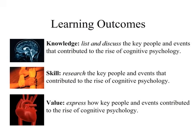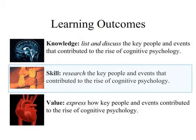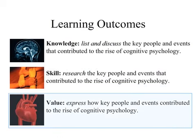Before we begin, let's outline the three learning outcomes for this module. In terms of knowledge, we want you to be able to list and discuss the key people and events that contributed to the rise of cognitive psychology. You're going to use your research skills to figure out who those people and events were and why they were significant — that's the valuing part. We want you to express why these events were significant and why it's important to look at our past before we look at the future.